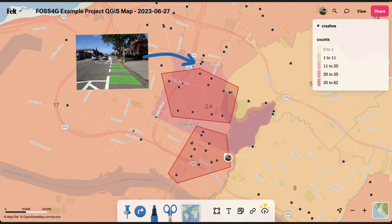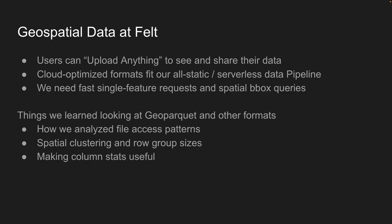The typical way users interact with Felt is our 'upload anything' functionality — from somebody's three-row CSV all the way up to five gigabytes. Once you get to that kind of scale, cloud-optimized formats become really interesting and important. Our entire pipeline is built on static serverless constructs using AWS — lots of S3, Lambda, ECS, short-lived jobs. We need fast single-feature responses, spatial bounding box queries, and things that would have been easy in Postgres but are harder in a serverless world.